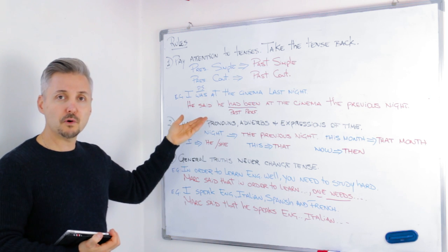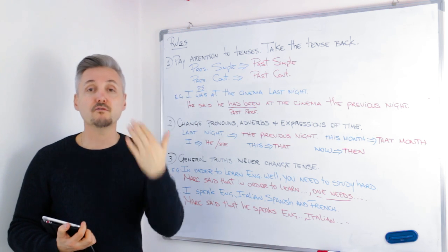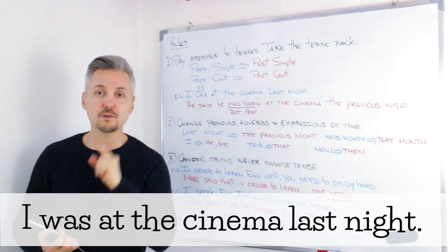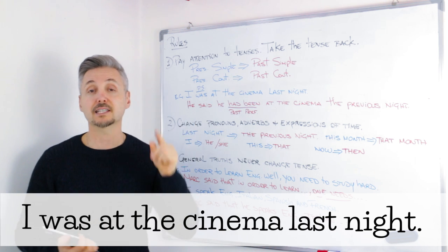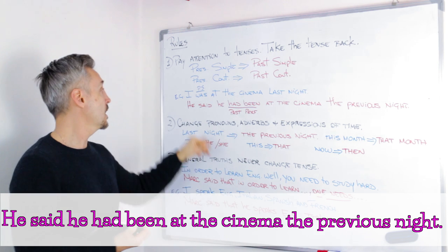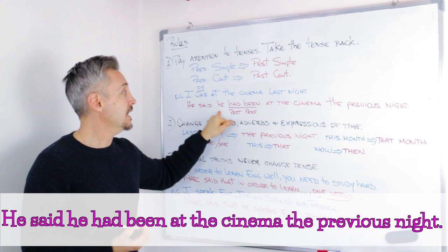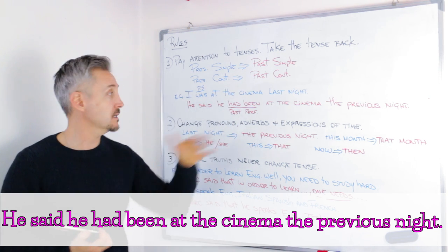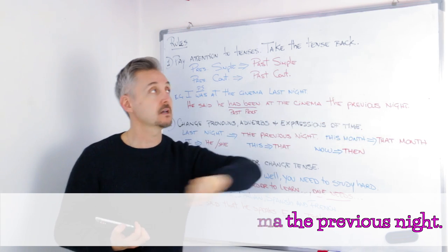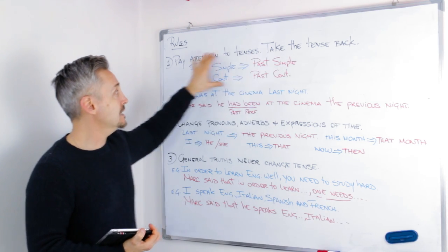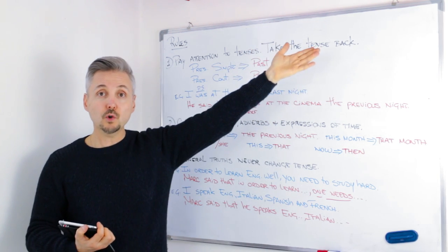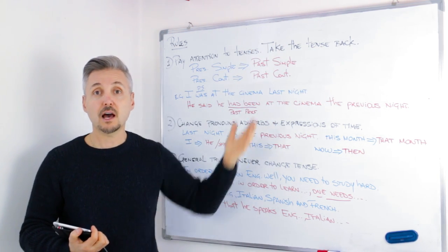Let me give you an example with the past simple. If we have a direct sentence — I was at the cinema last night — and you want to report that sentence, you have to take the tense back. So if you want to say this to a friend about me, Mark said he had been — past perfect — at the cinema the previous night. If you want a list of all the tenses with reported speech, you should click here to look at my lesson again.